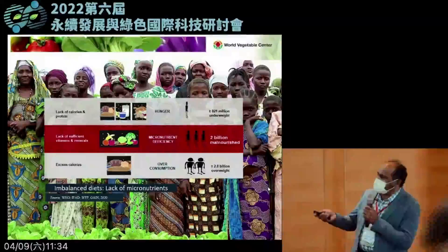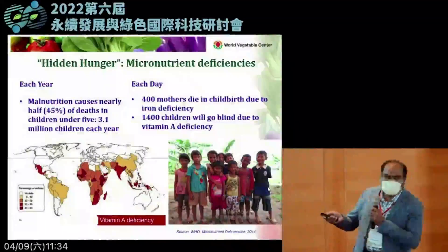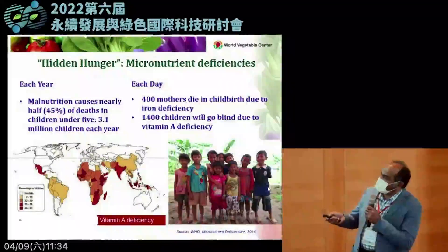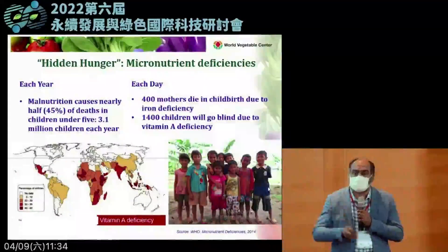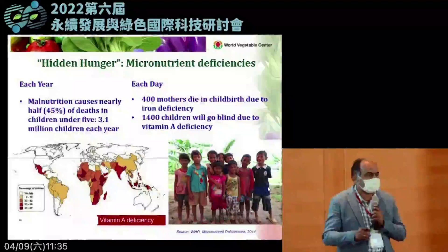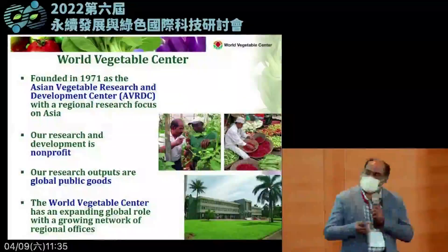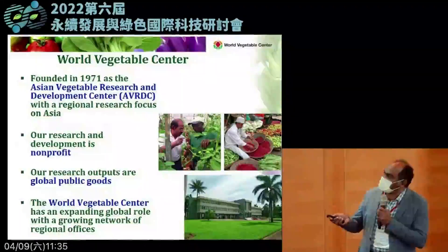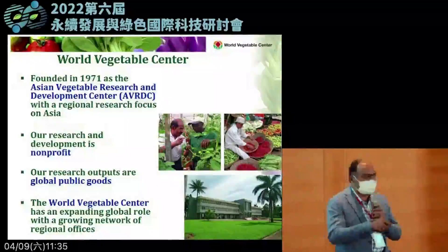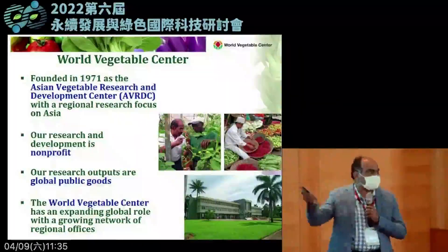There is a significant number of malnourished people living around the world. Each day 400 mothers around the globe die during childbirth due to iron deficiency; each day 1,400 children become blind because of lack of access to vitamin A. This clearly demonstrates the need for food and nutritional security for vulnerable communities, which is why the World Vegetable Center was founded — as AVRDC — in 1971, here in Taiwan, headquartered in Shanhua near Tainan.